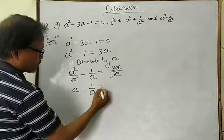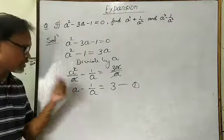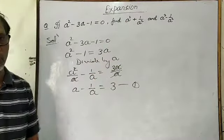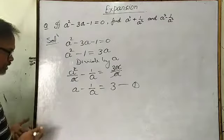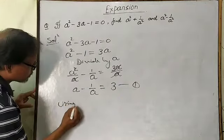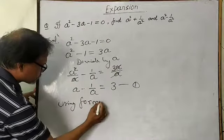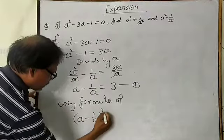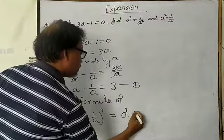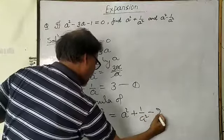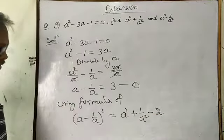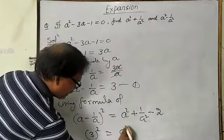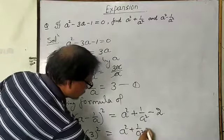This is the equation by which you can find a squared plus 1 by a squared. Now use the formula: a minus 1 upon a whole square is equal to a squared plus 1 upon a squared minus 2. Then put the value of a minus 1 upon a, that is 3, whole square equals a squared plus 1 upon a squared minus 2.